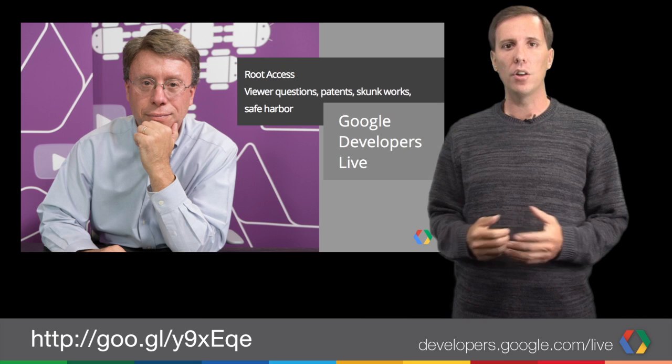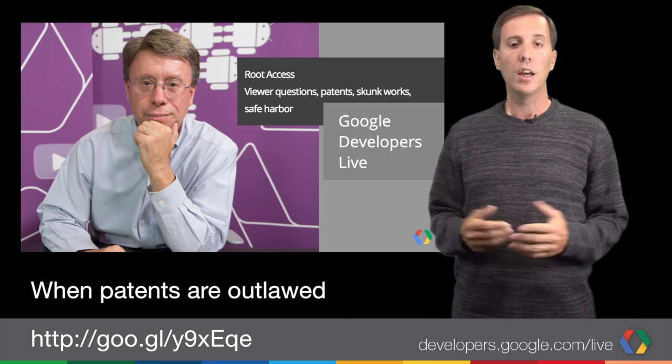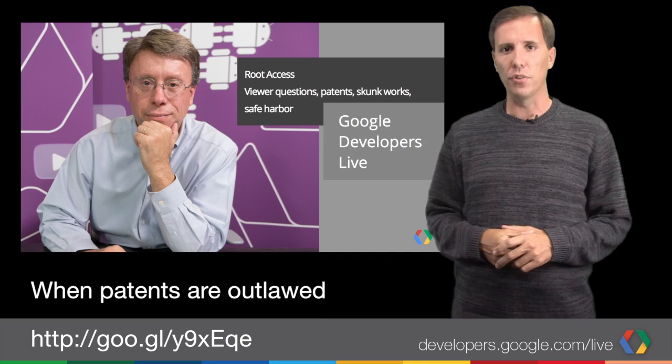As an innovator, you want to protect your work and your inventions. In the first episode of Root Access this week, Don Dodge talks about New Zealand's move to ban software patents, how Skunk Works projects and big companies operate, and takes questions from viewers.